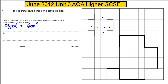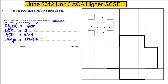The length scale factor is 2 — you were told that. So the area scale factor is 2 squared, which is 4. Therefore, if you multiply the area of the original shape by 4, you'll get the area of the new shape. The image has an area of 12 multiplied by 4, which is 48. Do not forget your units — it's 48 centimetres squared.